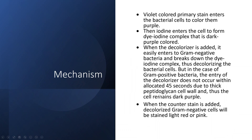Next we apply the decolorizer — acetone or alcohol. It easily enters the gram negative bacteria because of the thin cell wall. Acetone or alcohol can easily penetrate gram negative bacteria, enter the cell, break down the dye-iodine complex, and the dye will permeate out of the cell. So the decolorizer breaks down the dye-iodine complex in gram negative bacteria and they permeate outside, leaving gram negative bacteria colorless after decolorization.